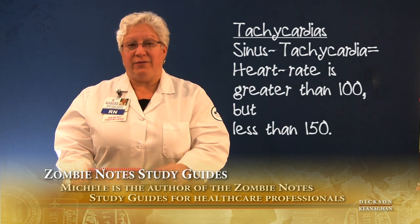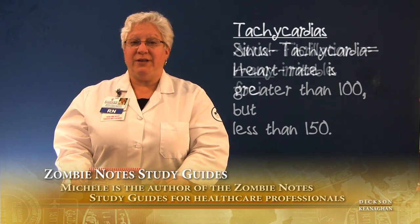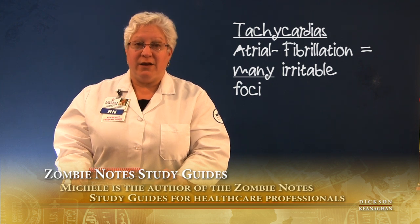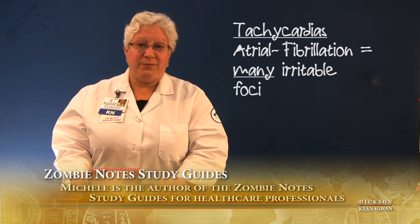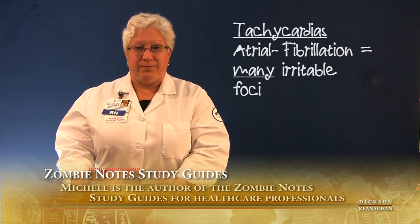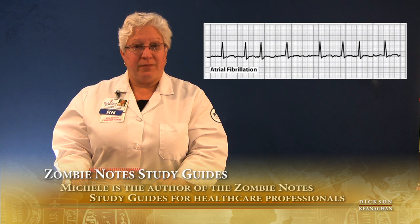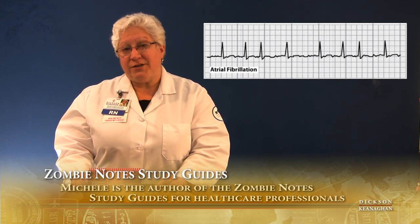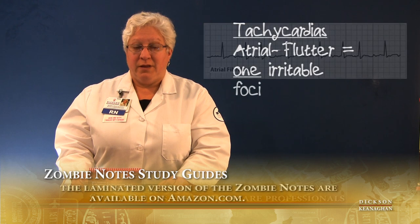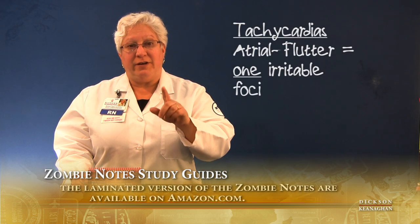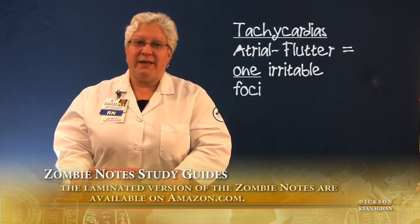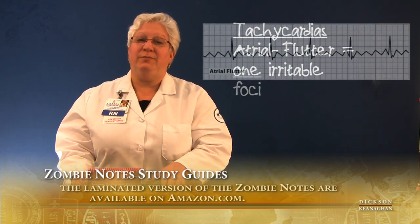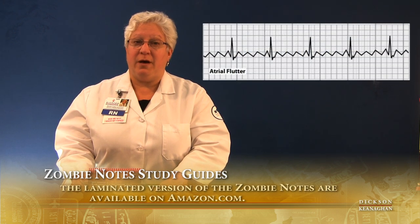Some of the rhythms that can get very fast are atrial fibrillation, where many irritable foci fire in the atrium and bombard the AV node and ventricles with many beats. The AV node will block some of those beats, but the rhythm can still become very fast. Another rhythm similar to atrial fibrillation is atrial flutter, where one irritable focus fires in the atrium causing a sawtooth or picket-fence baseline pattern, and the ventricular rate can become very rapid.